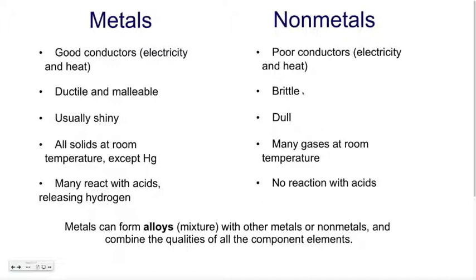They are brittle, so they break easily. They are dull, they're not shiny. Most of them, many of them are gases at room temperature. And they do not react with acids. Now metals can be mixed together physically to form alloys. And those alloys will have the properties of all the metals that are mixed together. So it makes them like super metals. So that's for the metals versus the non-metals. They are opposite of each other.